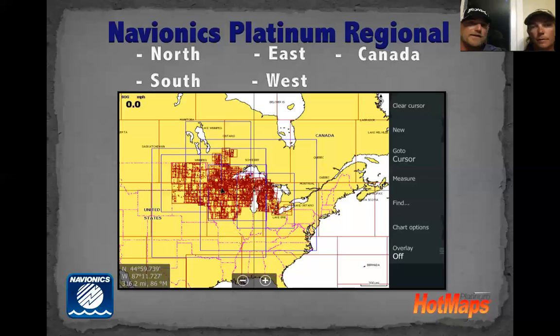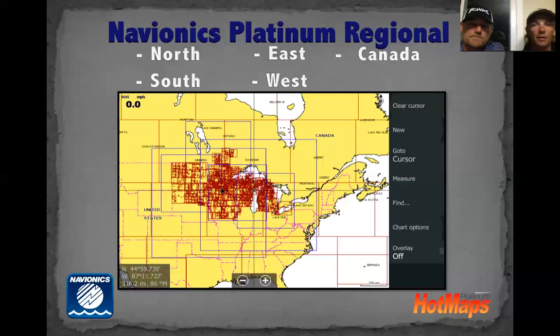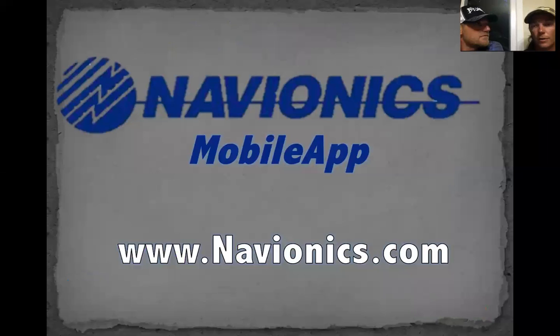It's the only way to go for anyone who's traveling. Even if you stay in one region, with Navionics Plus you're getting the freshest data. A lot of those tucked-away, smaller areas that haven't been mapped that well — now with the Sonar Charts they've got up-to-date data. That's what you get with the Navionics Plus card.